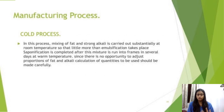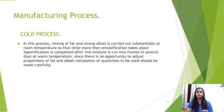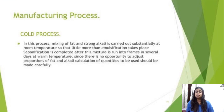There are three types of manufacturing processes for soap. The first is the cold process: mixing of fat and strong alkali is carried out substantially at room temperature so that little more than emulsification takes place. Saponification is completed after this mixture is run into frames over several days at room temperature. Since there is no opportunity to adjust proportions of fat and alkali, calculation of quantities to be used should be made carefully.